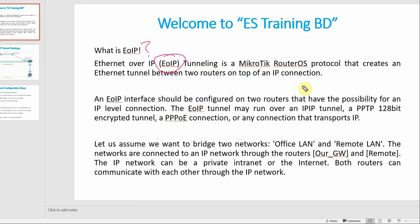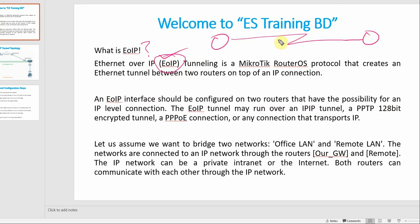The router uses an IP connection to create the EoIP tunnel. The EoIP interface should be configured on routers that have IP-level connectivity to each other. There may be a middle man — an ISP — providing the direct connection, but the routers need IP-level connectivity for EoIP configuration.